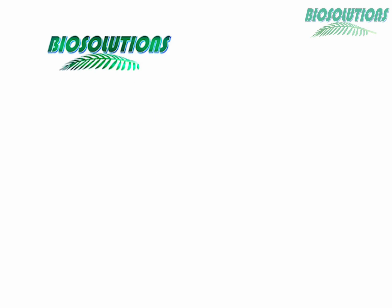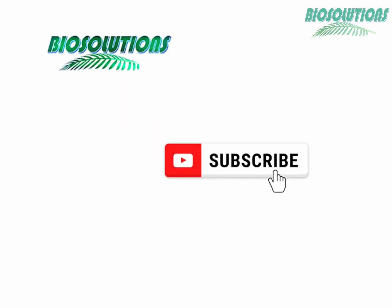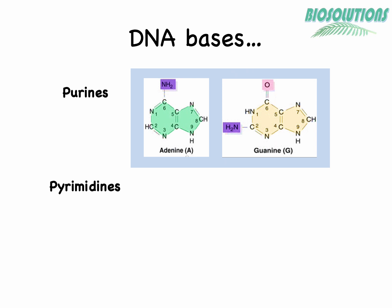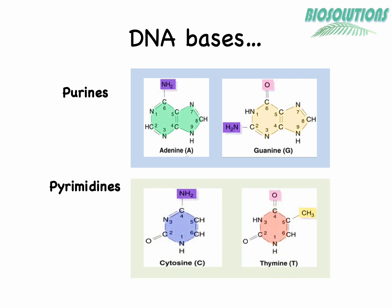Nucleotide bases are of two types: purines and pyrimidines. Purines, which are adenine and guanine, have two rings in their structure, and pyrimidines, which are cytosine and thymine, have one ring in their structure. Mutations change DNA in which one base is replaced by another.